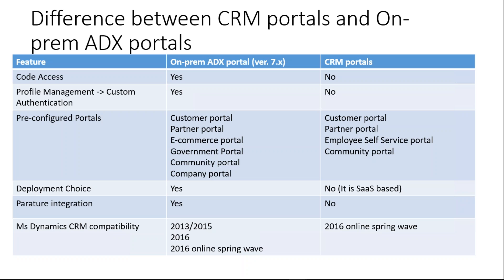The next difference is deployment choice. In ADX on-prem, we can host the portal in our own server environment, our own IaaS, Azure, or wherever we want. But CRM portal is SaaS-based so that flexibility doesn't exist. Also, Parature integration is currently not supported in CRM portal but is available in on-prem ADX portal. Regarding CRM compatibility: ADX on-prem portal 7.x supports CRM 2013, 2015, 2016, and 2016 Online Spring Wave, but CRM portal only supports 2016 Online Spring Wave.